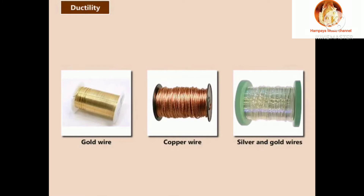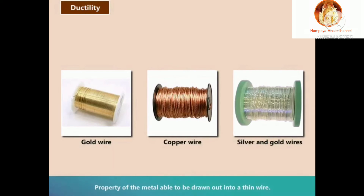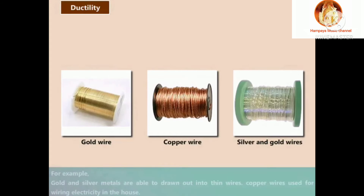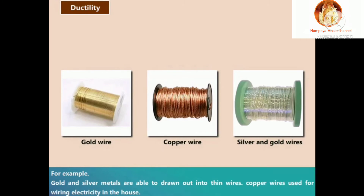Ductility: This is the property of a metal to be drawn out into a thin wire. For example, gold and silver can be drawn out into thin wires. Copper wires are used for electrical wiring in the house.